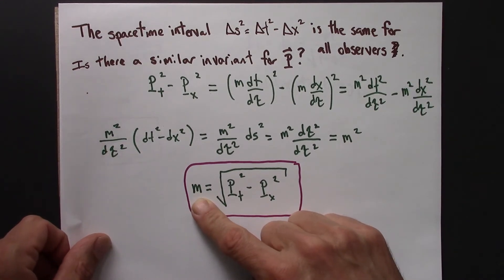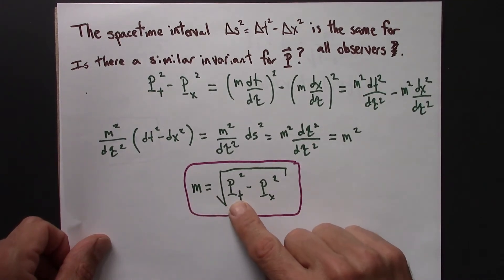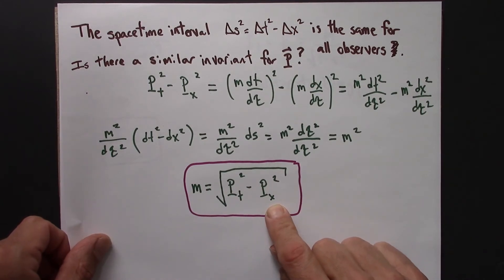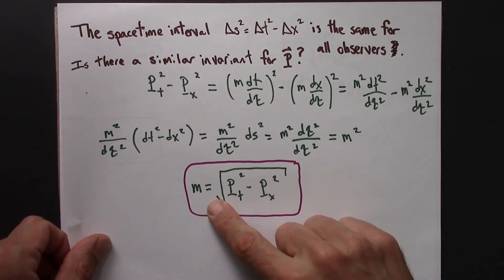So mass is a frame independent quantity. Mass doesn't depend on what reference frame you're in. So it turns out that if you take the time component of momentum squared, minus the spatial component of momentum squared, square root of that, you always get mass.